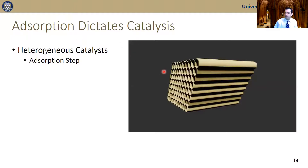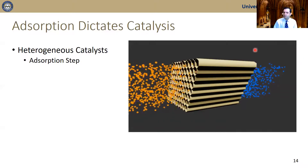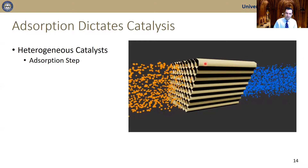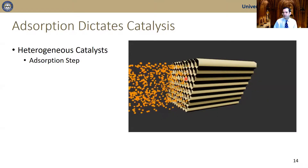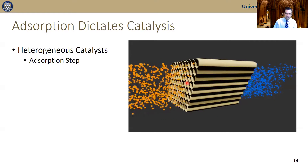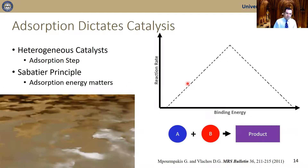Why does adsorption play a role in catalysis? Imagine you have catalyst pellets: we feed the reactants on the left side and get the products on the right-hand side. The interactions of your reagents with the catalyst play an important role. This is exemplified by the Sabatier principle, which says that in order to have an active catalyst, you need the interactions between the catalyst and your reagents to be just right.